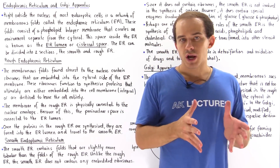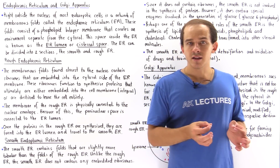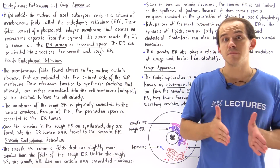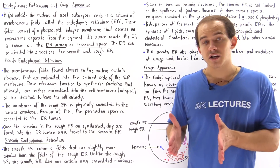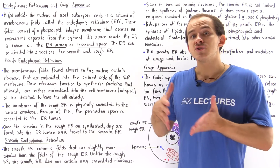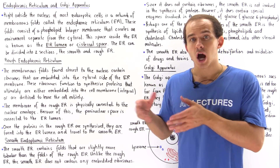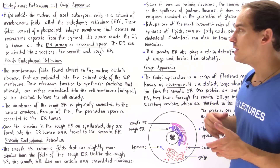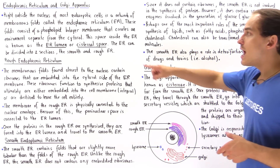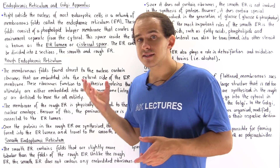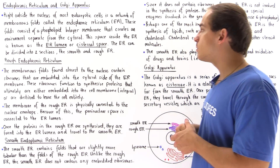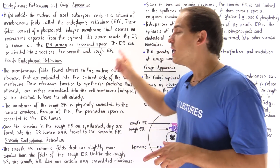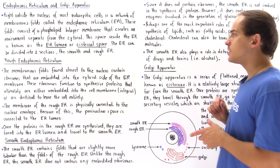The membrane of the endoplasmic reticulum is a phospholipid bilayer that separates the cytosol portion of our cell from the inside space of our ER. The fluid inside our endoplasmic reticulum is known as the ER lumen or the cisternal space.